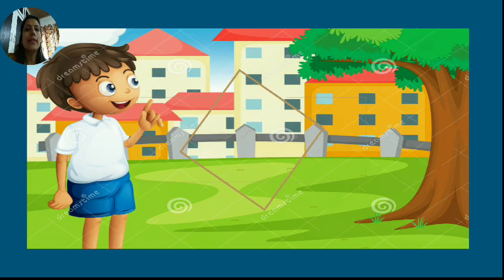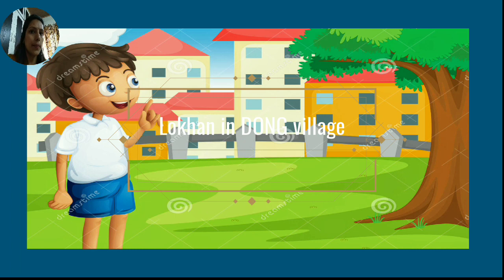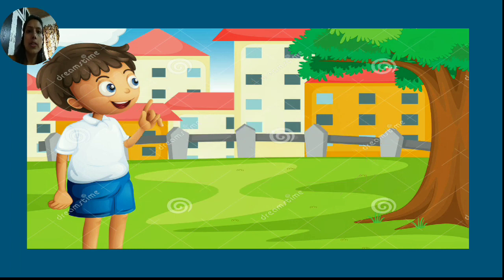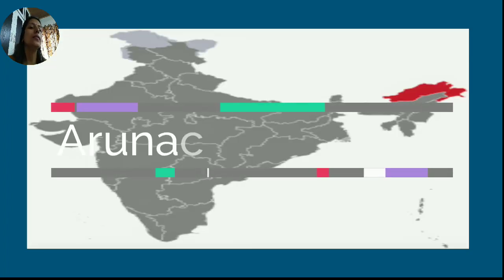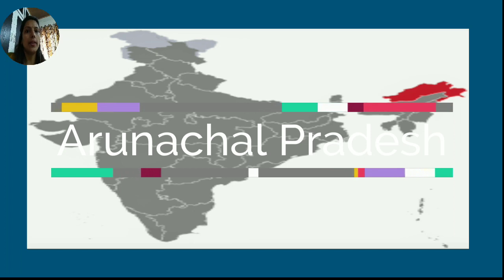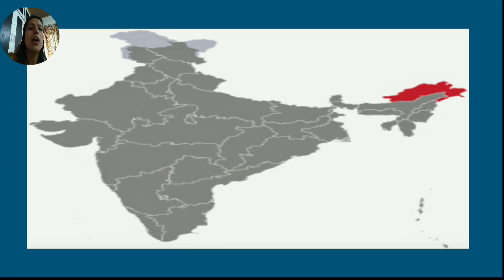There is a boy named Lokhan. He used to live in a village called Dong. This is Dong village, which is in Arunachal Pradesh. You can see that on the map of India, the easternmost state marked in red color is the location of Arunachal Pradesh.